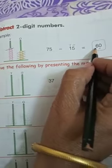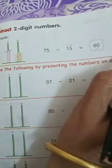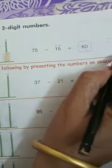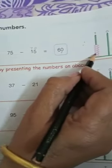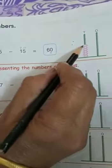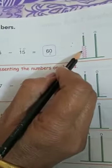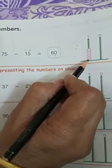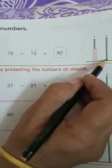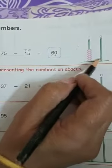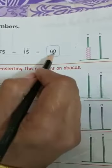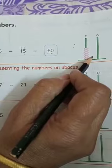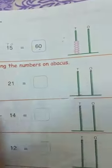And now you have to show the answer on this abacus. It is already shown: 1, 2, 3, 4, 5, 6 — 6 tens. Clear? The answer is here, 6 tens.